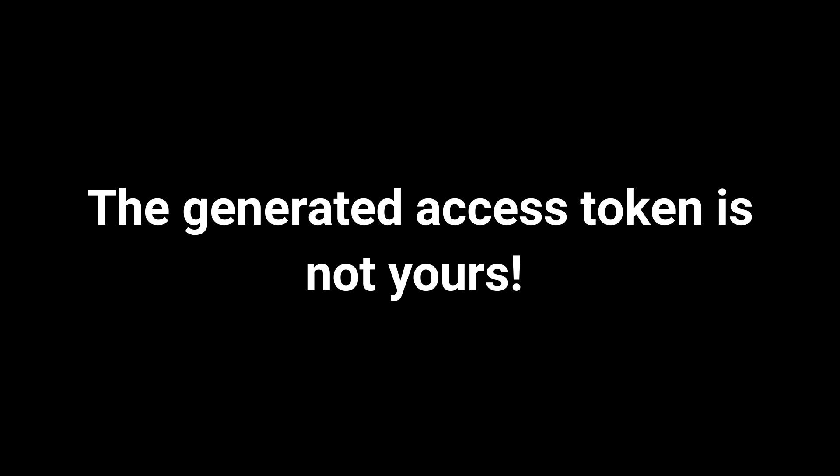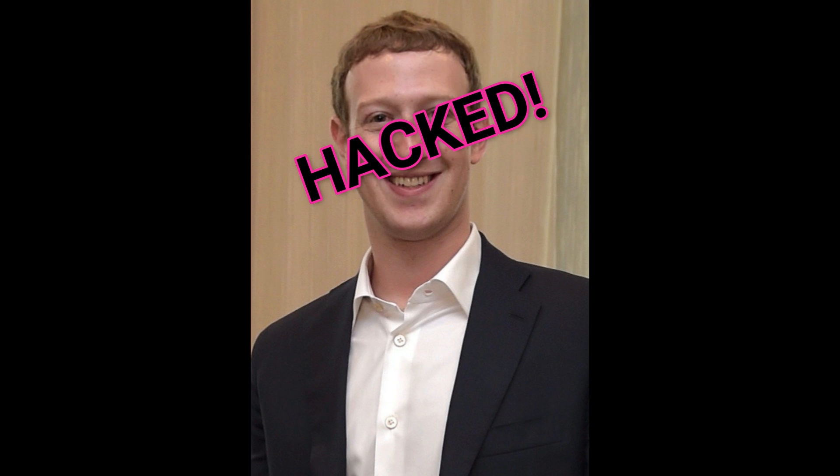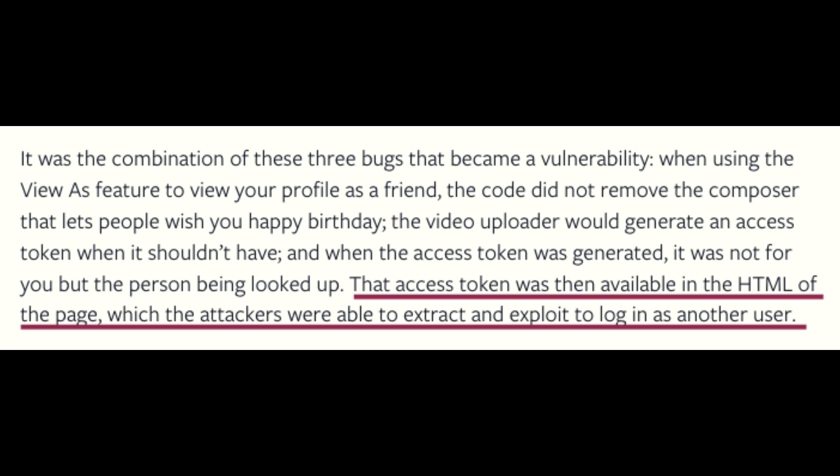But wait — it is not generating your Facebook access token here. It is actually generating the access token of the person who you are using to see your profile with the View As option. Which means if I'm using the View As option to see how my profile looks from Mark Zuckerberg's Facebook account, then I'm actually getting the access token of Zuckerberg's Facebook account. And I can simply find this access token in the HTML of the page, because it is generated there by the video uploader — unintentionally.